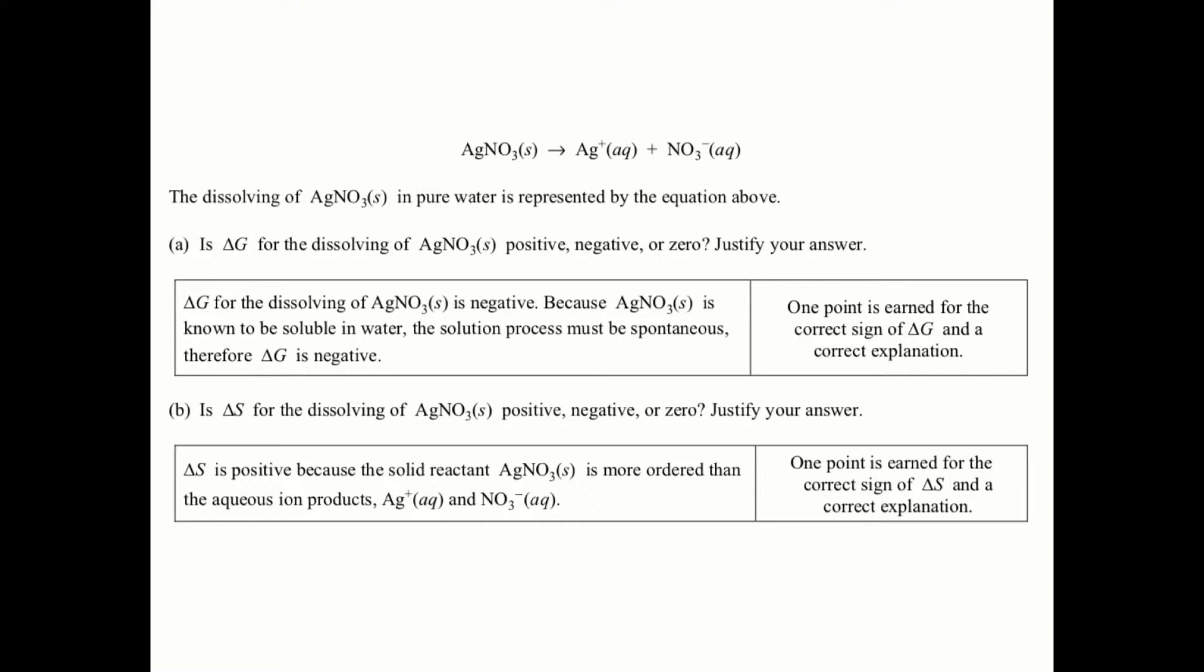Part B asks: is delta S for the dissolving of silver nitrate positive, negative, or zero? Justify your answer. If you're taking a solid and breaking it up into its ions, you're increasing disorder. Therefore, because you have more ions in solution for your products, you're going to be increasing your disorder and entropy is going to be positive.